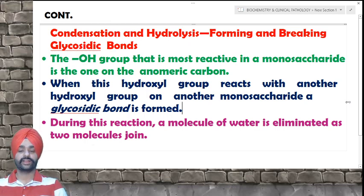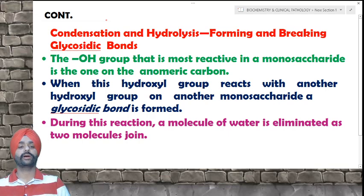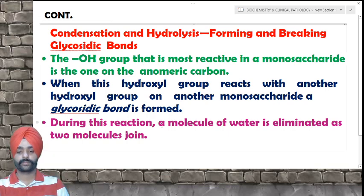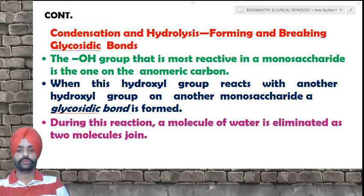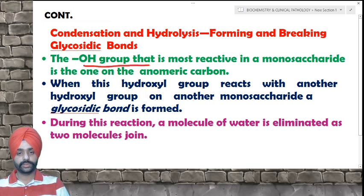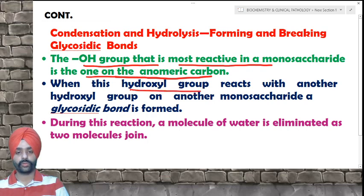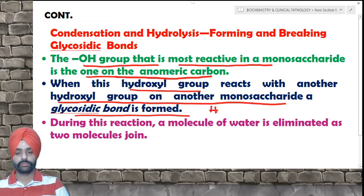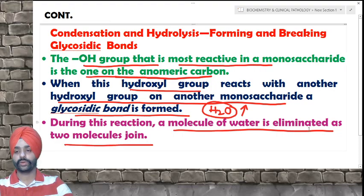Disaccharides are formed by condensation and linkage of two monosaccharides. The most reactive hydroxyl group in a monosaccharide is the one on the anomeric carbon. When the OH group on one monosaccharide reacts with the OH group on another monosaccharide, a glycosidic linkage is formed by removal of water. During this condensation reaction, a molecule of water is eliminated as the two molecules join together.